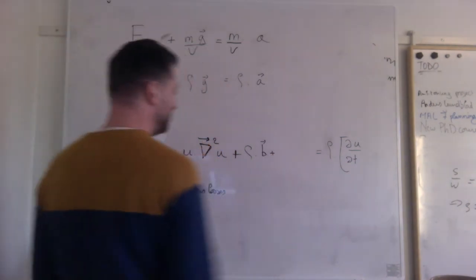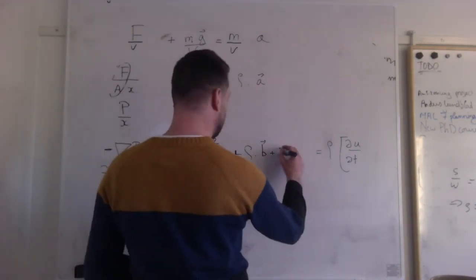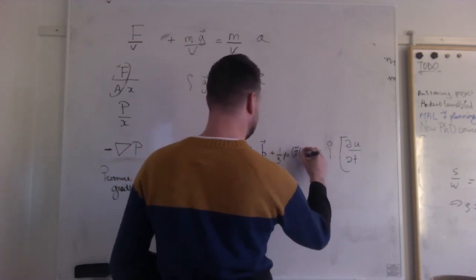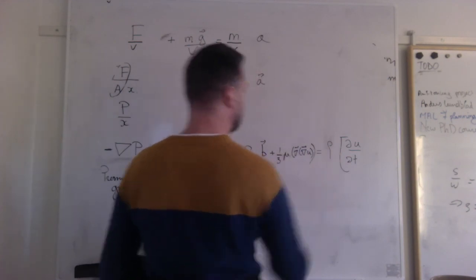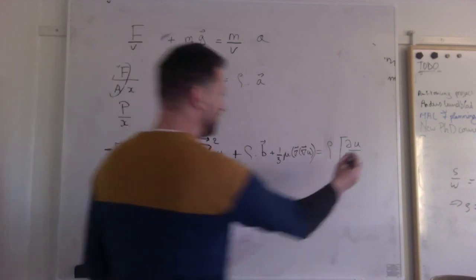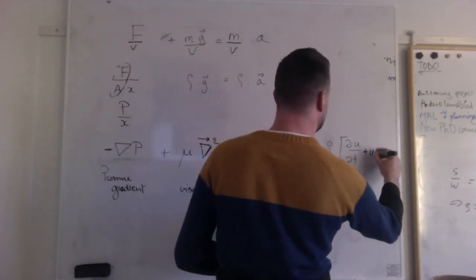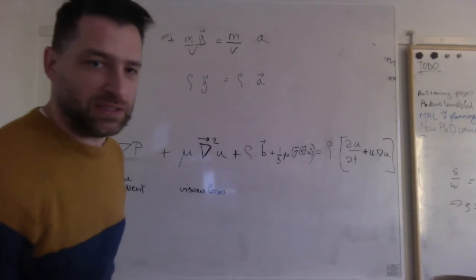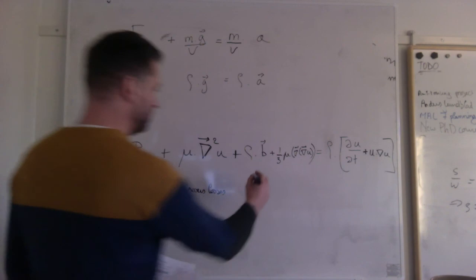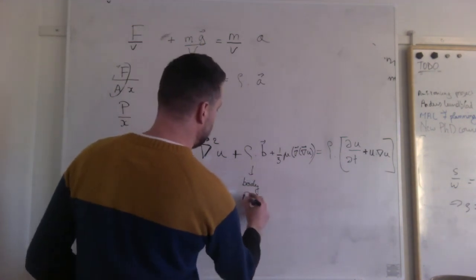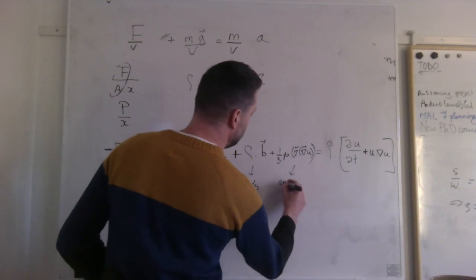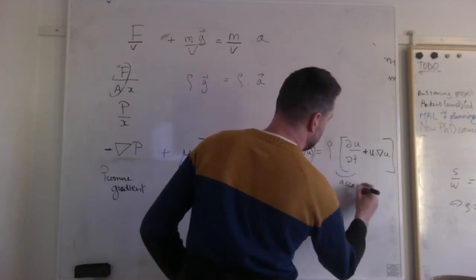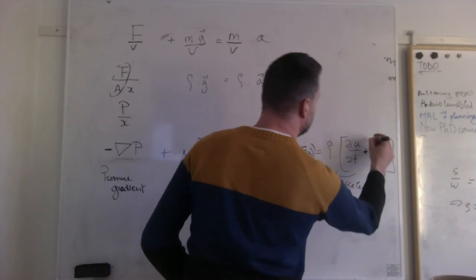There is another term here that I have to think of, and it is the compressibility. And that I'm going to write as, without deriving it, 1 over 3 times mu times gradient of the gradient of the velocity. And there's another term here that has to do with the rotation of the liquid. That's for turbulent flow. And it's u times gradient u. That has to do with the rotation of the fluid. So now I have a body force. This is a compressibility term. And this is an acceleration. And this has to do with the rotation of the liquid.